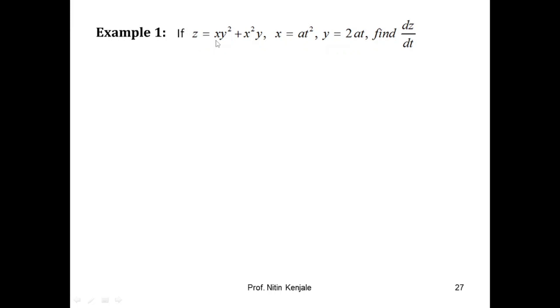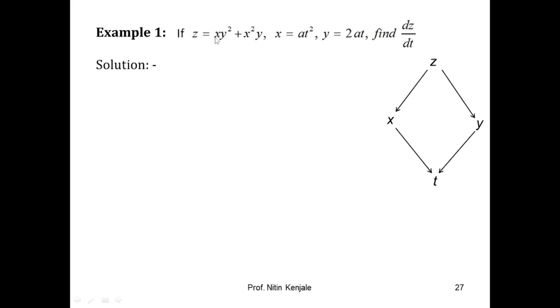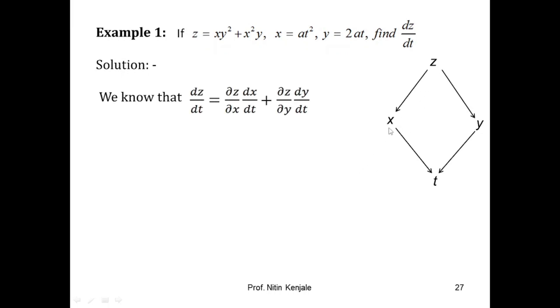Now let me show you an example. If z = xy² + x²y, x = at², and y = 2at, then we are asked to find dz/dt. Let us first draw the tree diagram: z is a function of x and y, and x and y are functions of t, so z becomes a composite function of t. Its derivative dz/dt is given by (∂z/∂x)(dx/dt) + (∂z/∂y)(dy/dt).